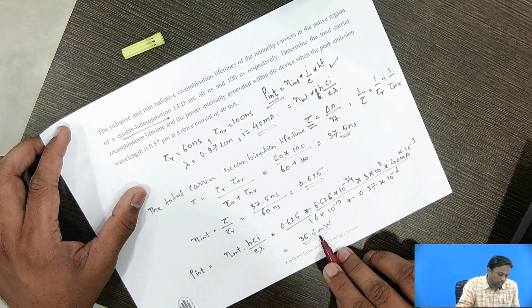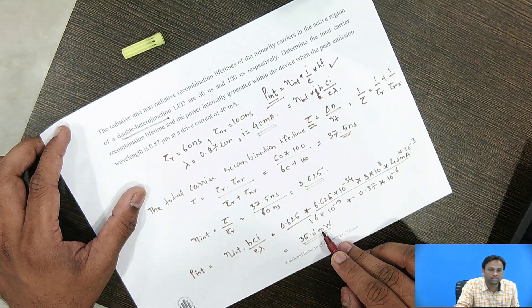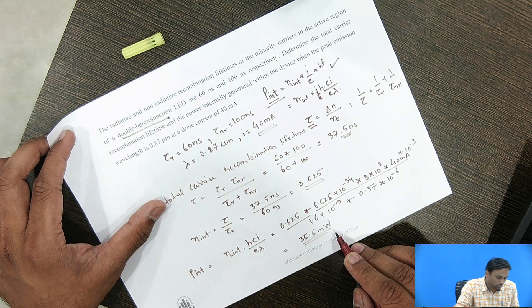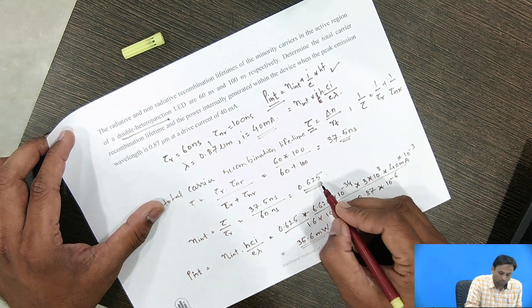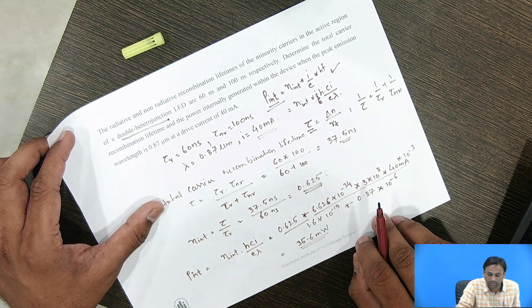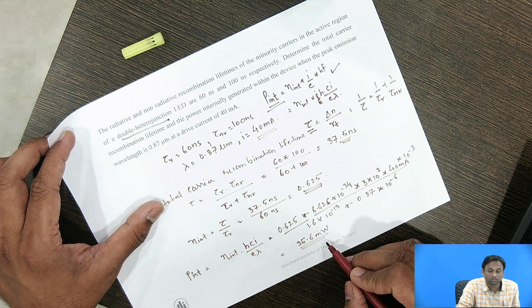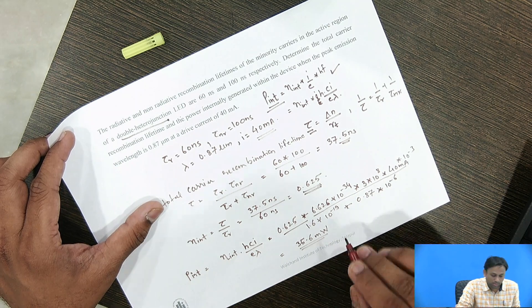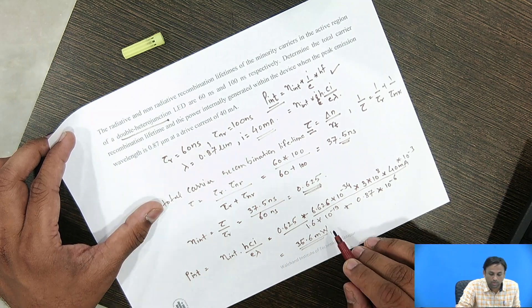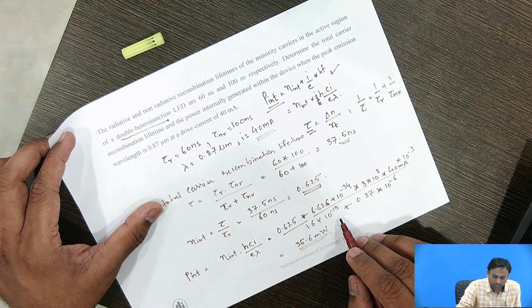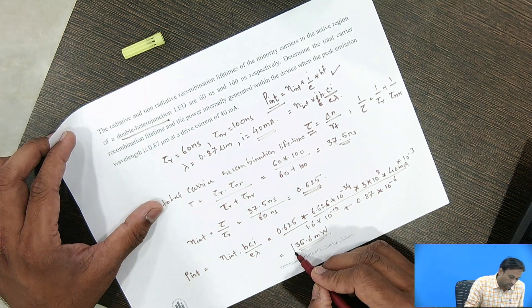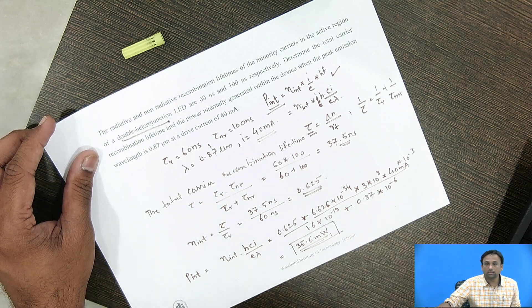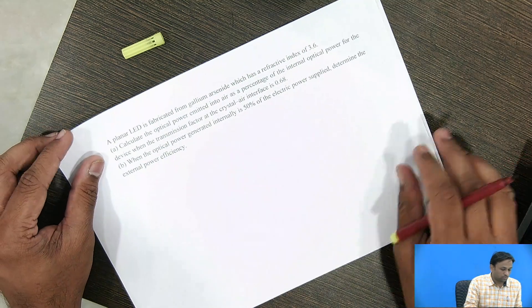The total internal power generated is 35.6 milliwatts. The LED has an internal quantum efficiency of 62.5% and generates 35.6 milliwatts of optical power internally. Note that this power will not be readily emitted from the device. Now we move on to solve the second example.